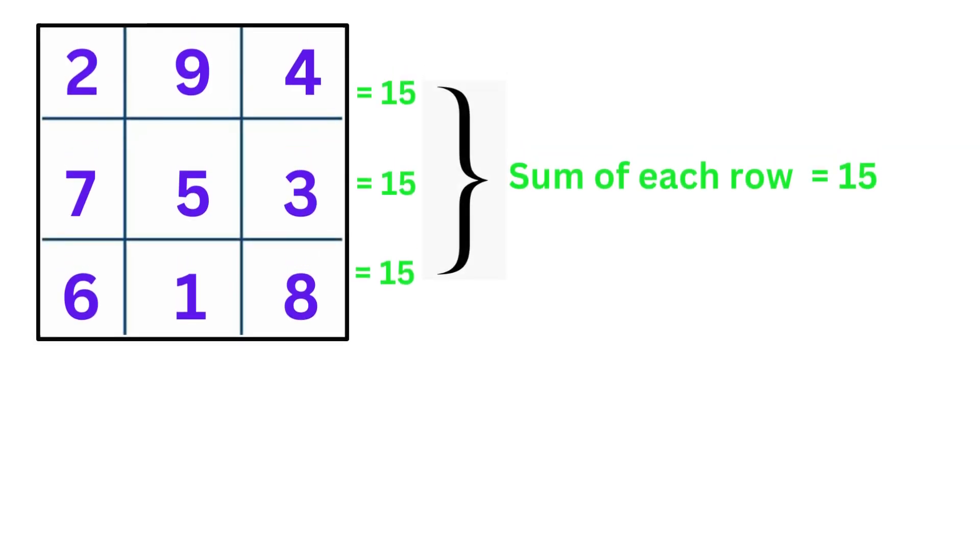We have to do some mathematical operations to know whether it is a magic square. Find out the sum of each row and check whether all are equal. Yes, all are equal.